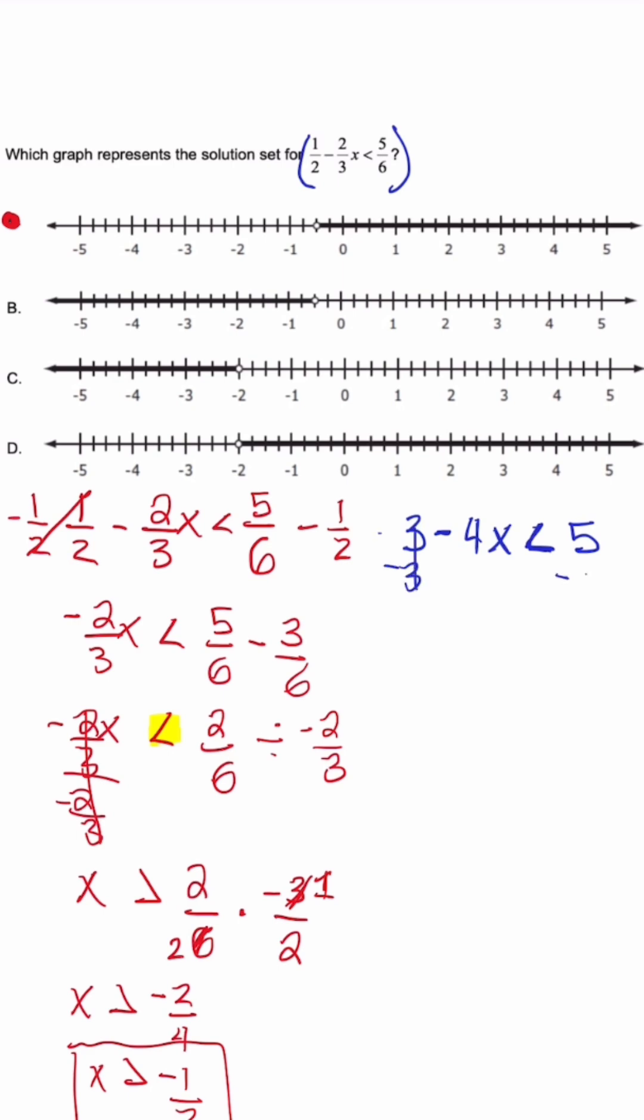And after I divide by negative 4, remember that inequality sign changes and flips. X is greater than negative 2 over 4, and when we simplify we get the same answer of x is greater than negative 1 half. This is why I always tell you guys, get rid of the fraction if you can.